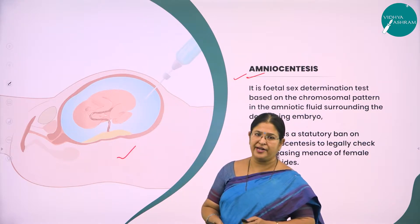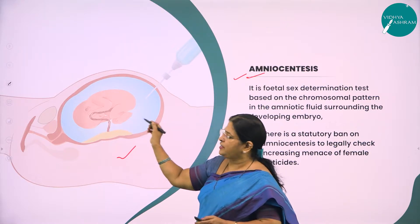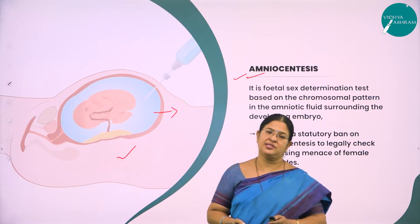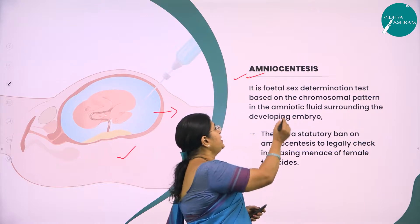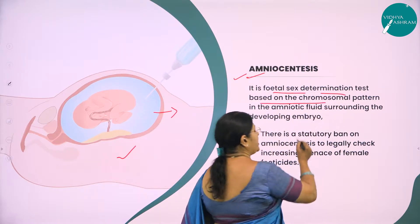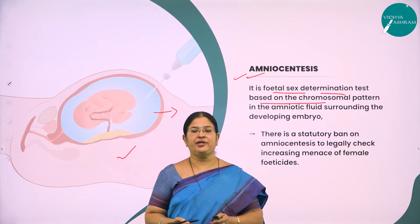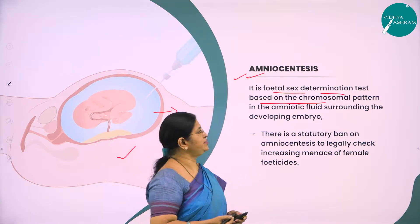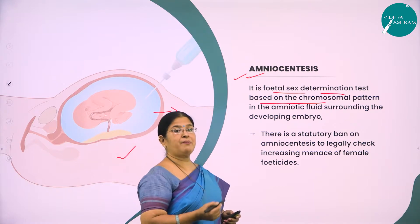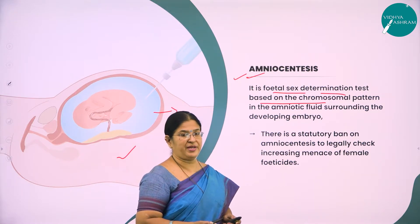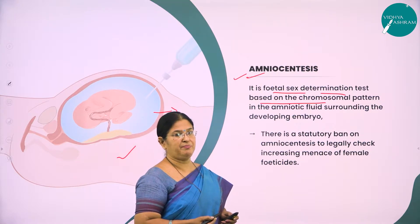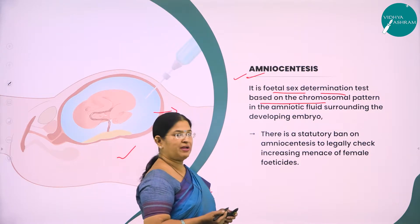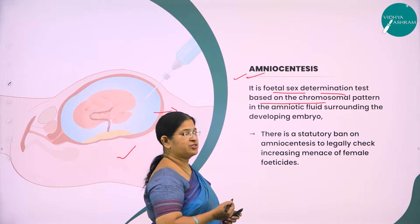You can see a beautiful picture here of the developing fetus surrounded by amniotic fluid. Amniocentesis is a fetal sex determination test based on the chromosomal pattern in the amniotic fluid surrounding the developing embryo. If the chromosomal pattern is XX, it will be female; if it is XY, the developing fetus will be male.